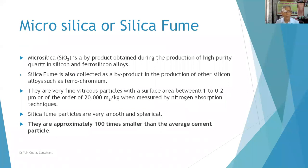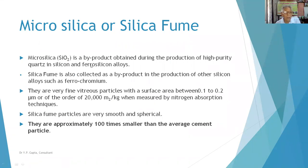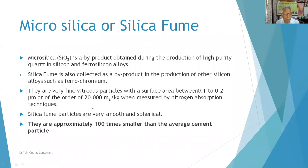The next item is micro silica or silica fume. Silica fume is also collected as a by-product in the production of silicon alloys such as ferrosilicon. These are very fine material particles with a surface area between 0.1 to 0.2 microns, of the order of 20,000 square meters per kilogram, measured by nitrogen absorption technology. Silica fume particles are very smooth and spherical — approximately 100 times smaller than the average cement particle.